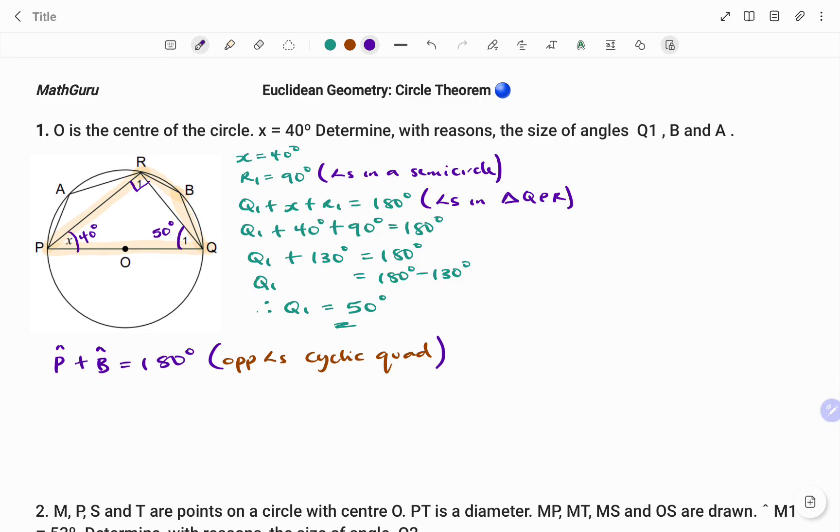So therefore, putting in my values, angle at P, that's x, and that is 40 degrees, plus angle B equals 180 degrees. Therefore, angle B equals 180 degrees minus 40 degrees, and that will give me 140 degrees.